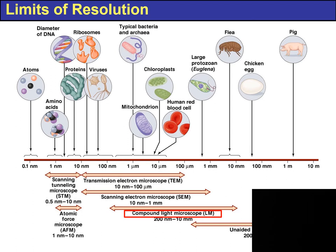Therefore, with the image of the red blood cells — with your naked eye you would just see red, whereas with a compound microscope you would be able to see the individual circular erythrocytes. The chloroplast, you would need a compound microscope to discern individual chloroplasts. Mitochondria also require the compound microscope. Bacteria cannot be seen with the naked eye — you need a compound microscope at least. Unaided, you can only resolve a pig, a chicken egg, and a flea.